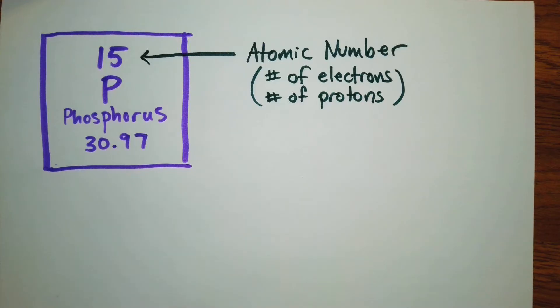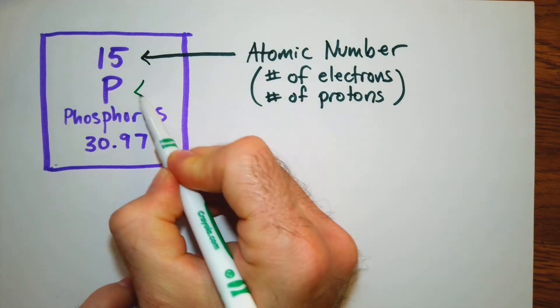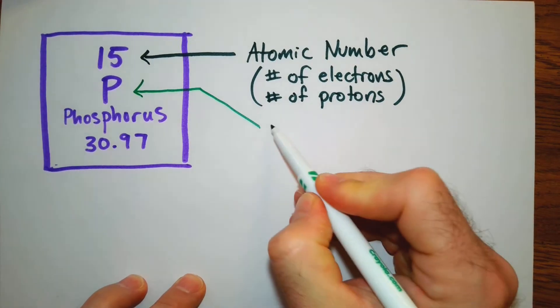When we're talking about an element, the number of electrons and protons will be the same. And just to be familiar with it, you should know that this is the element symbol.